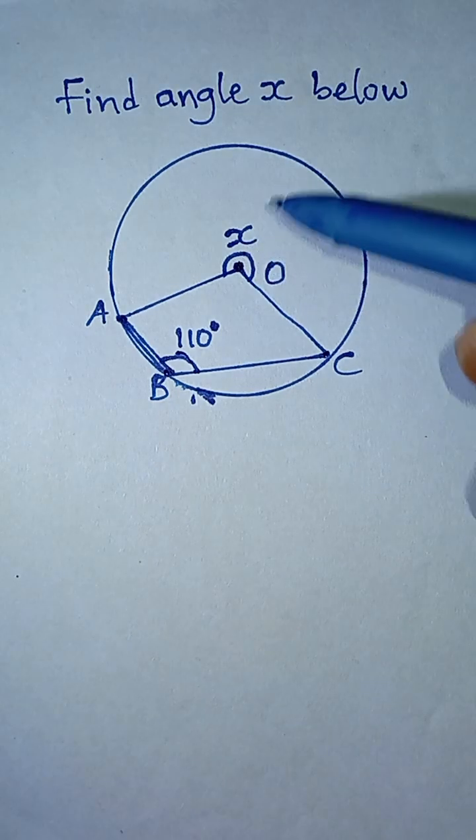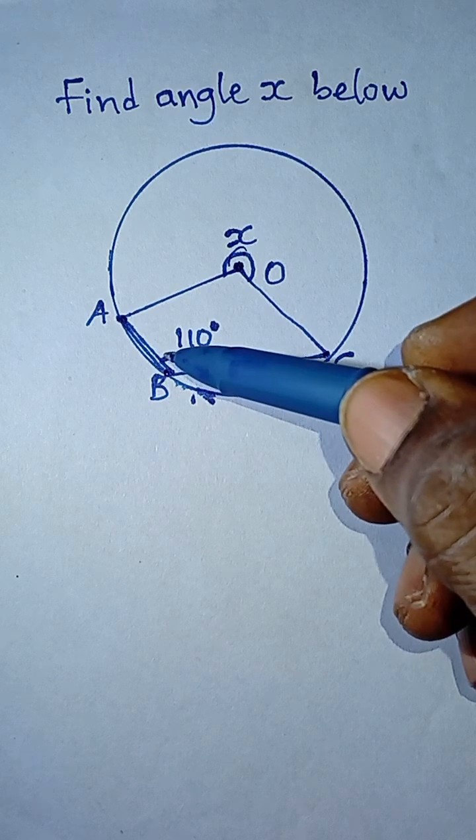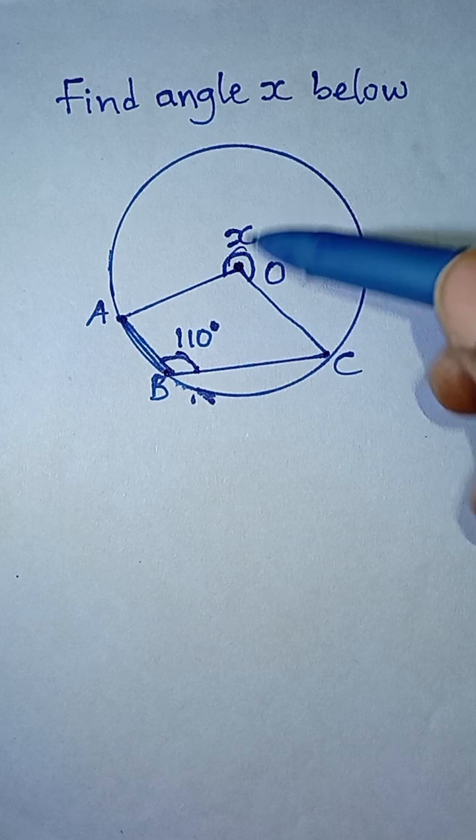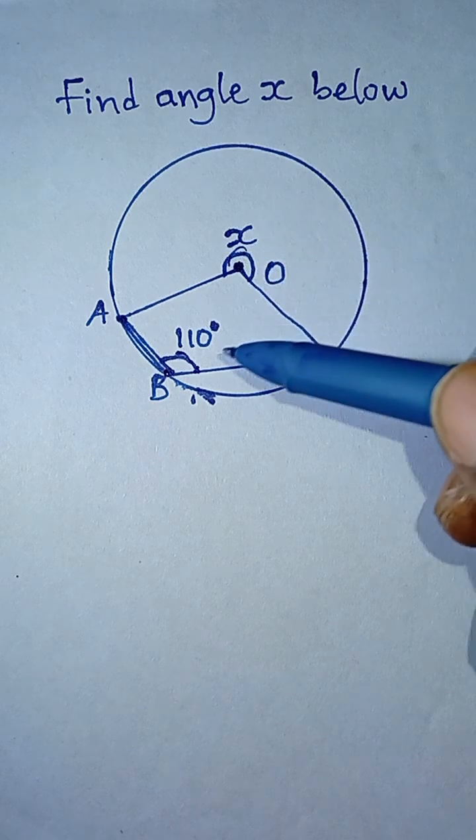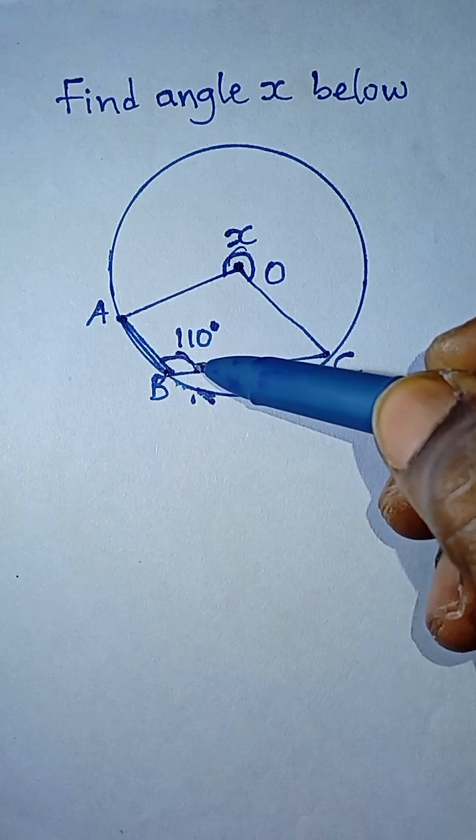And how are they related? That angle at center is twice that at the circumference of a circle. So that is the theorem to apply. The angle at the center of a circle is equal to twice the angle formed at the circumference of the circle.